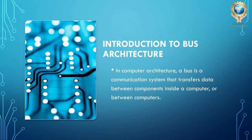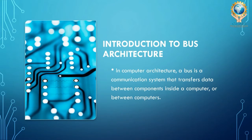An early computer might contain a hand-wired CPU of vacuum tubes, a magnetic drum for main memory, and a punch tape and printer for reading and writing data. A modern system might have a multi-core CPU with DDR4 SDRAM for memory, a solid-state drive (SSD) for secondary storage, a graphics card, an LCD display, a mouse and keyboard for interaction, and a Wi-Fi connection for networking.